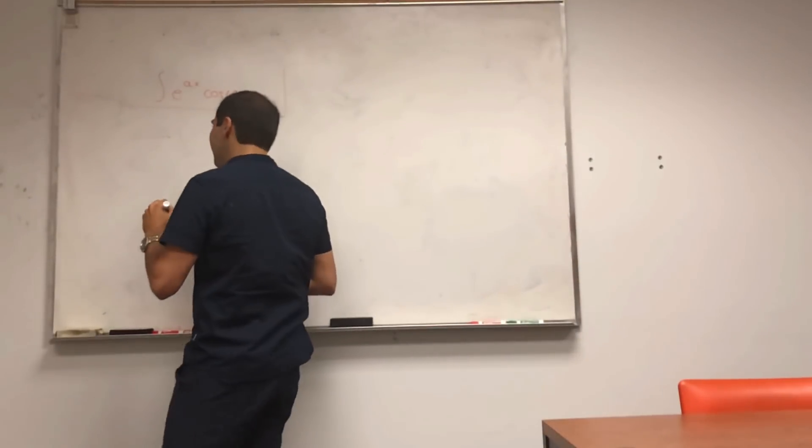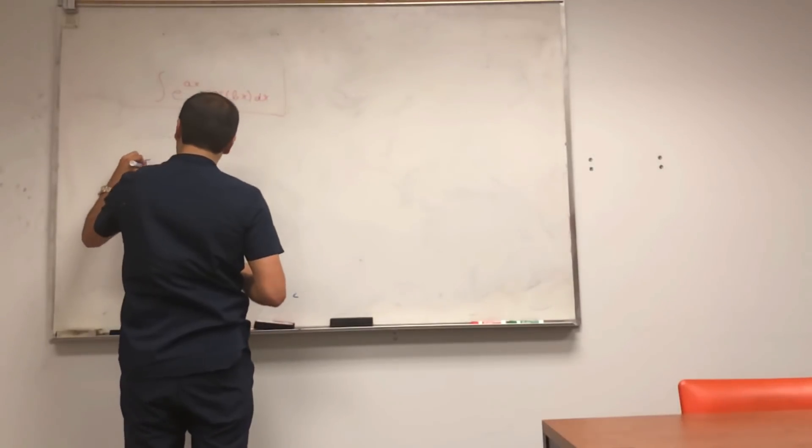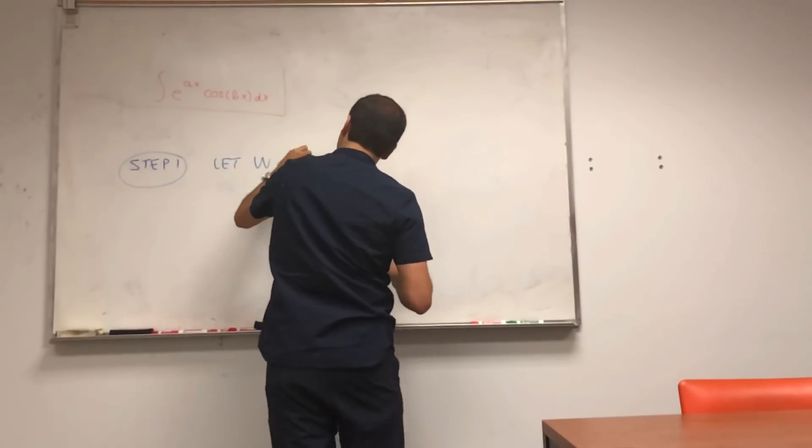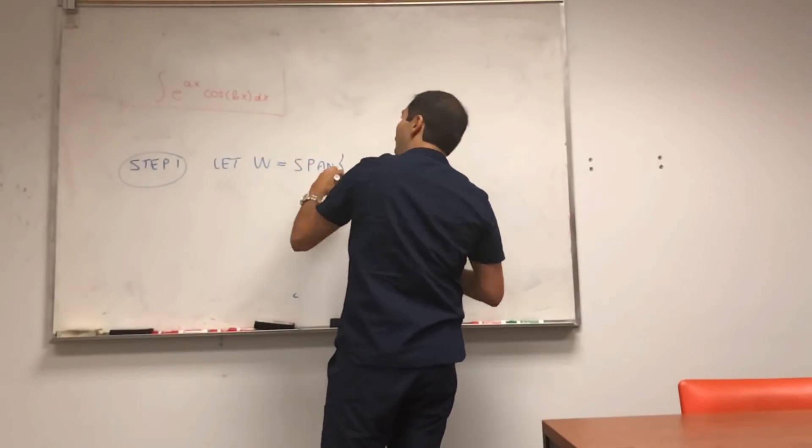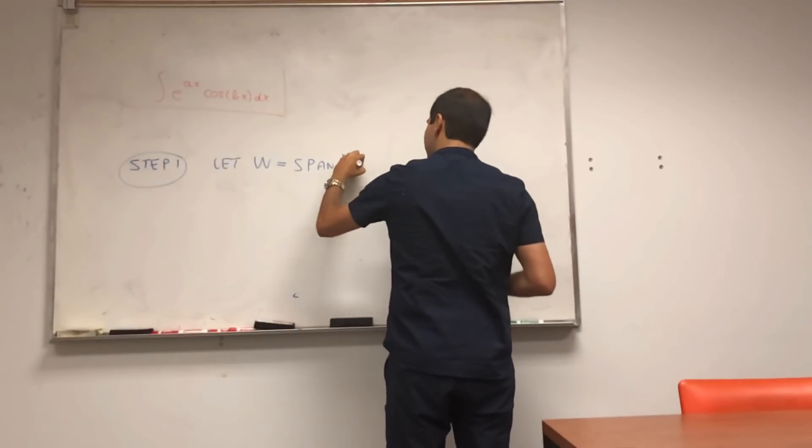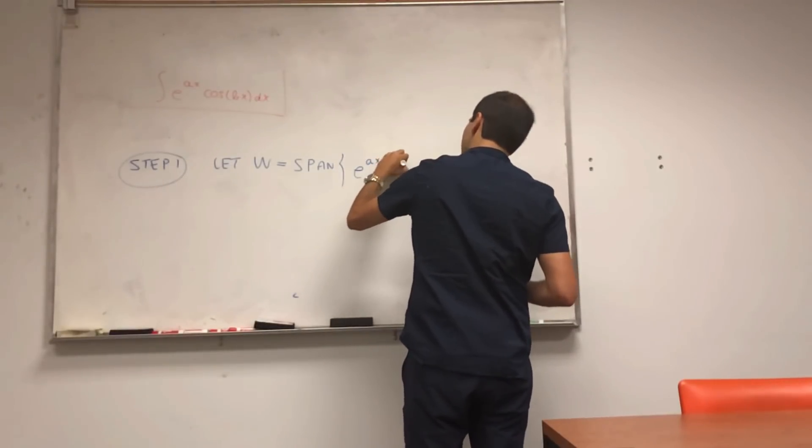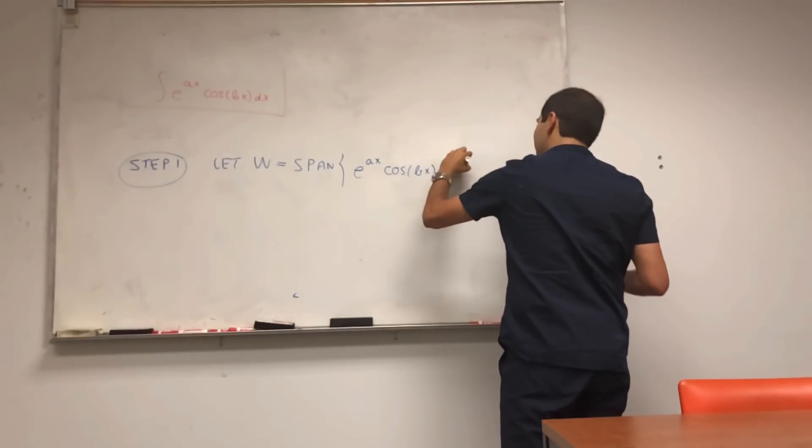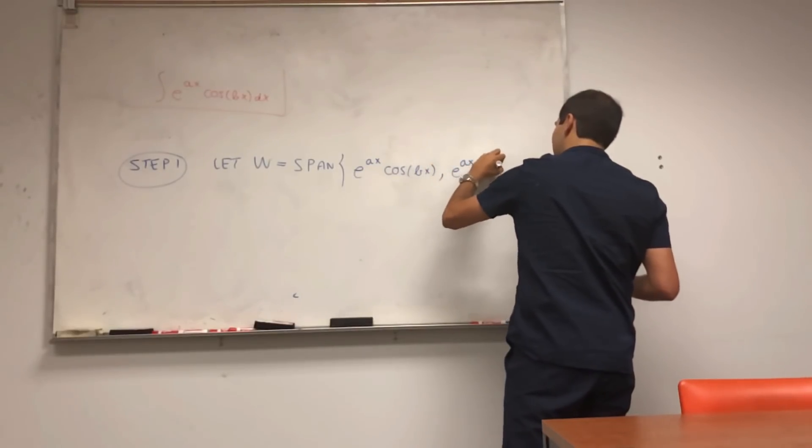So in particular, consider the following vector space. Let w be the span of e to the ax cosine bx and its cousin e to the ax sine bx.